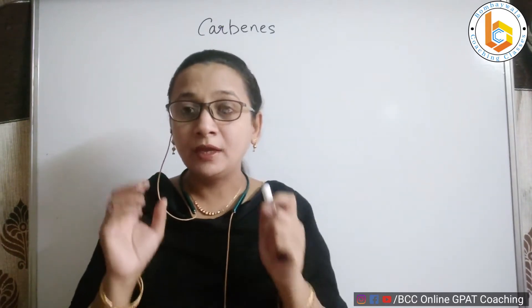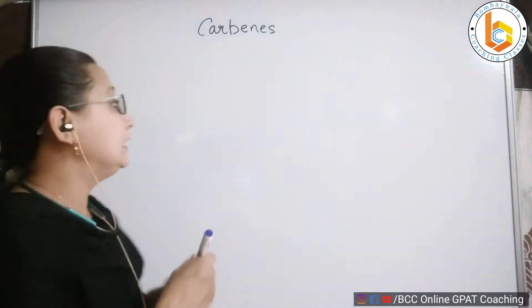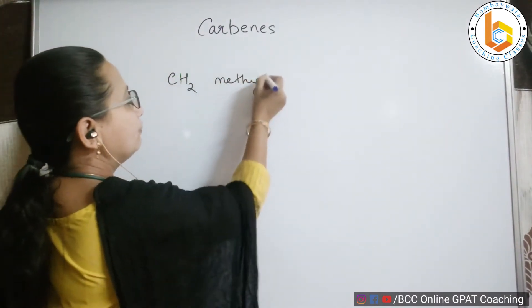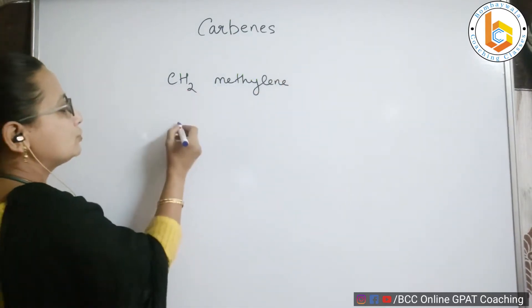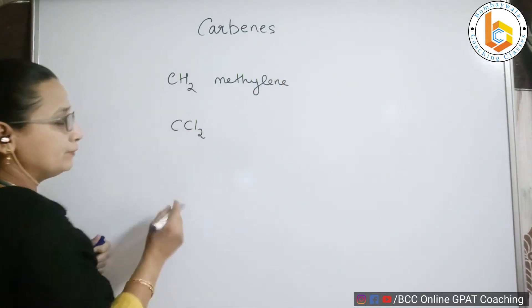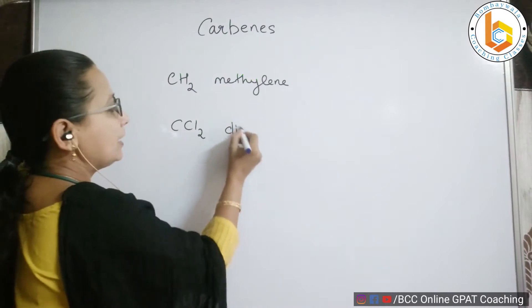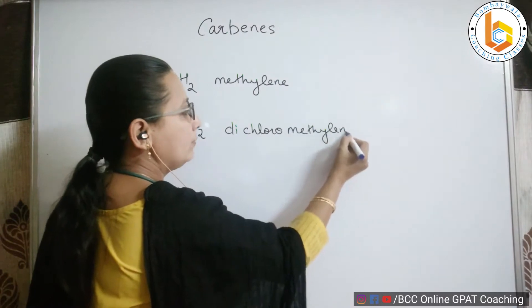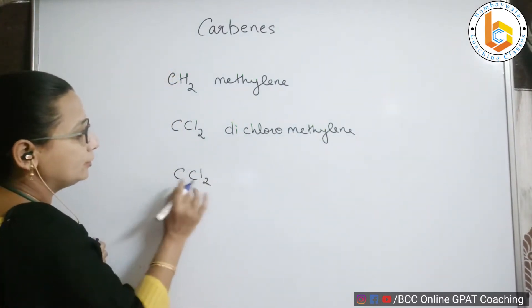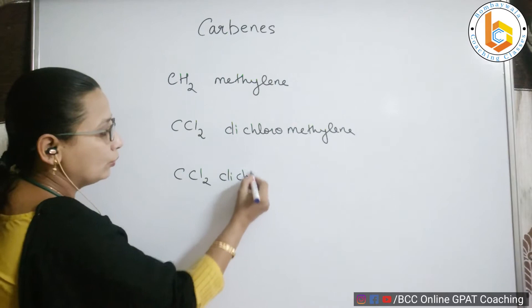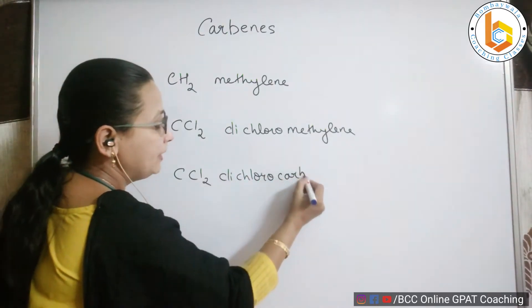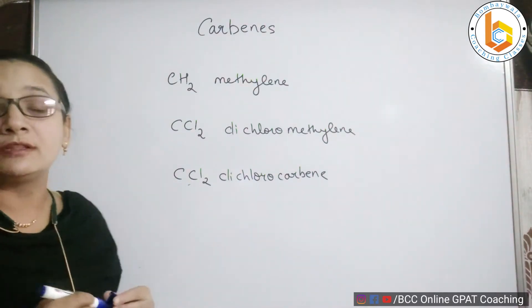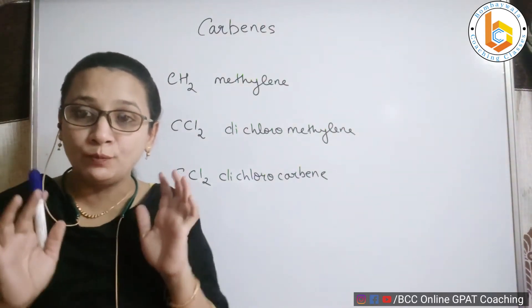Let us talk about carbenes now. Carbenes are nothing but methylene. Instead of CH₂ it can be CCl₂, which is called dichloromethylene, or more commonly dichlorocarbene. So this is a carbon — a methylene CH₂ — but with substitution on it.